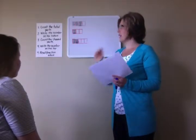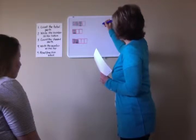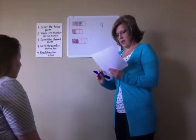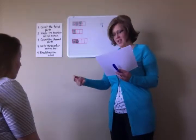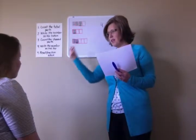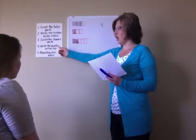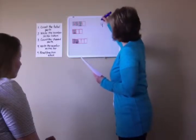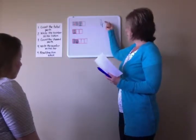Now the next step that I follow is I write the number on the bottom. Where do I write the number, class? On the bottom. So I'm going to write a number four on the bottom. Now I count the shaded parts. What's the next step? Count the shaded parts. That's right. There are one, two, three shaded parts. How many shaded parts, class? Three. Awesome. The next step is I write that number on the top. Write the number on the top. Here I'll write the number on the top, above the division bar. And what number did I write on top? Three.